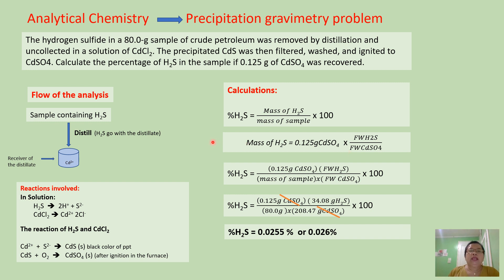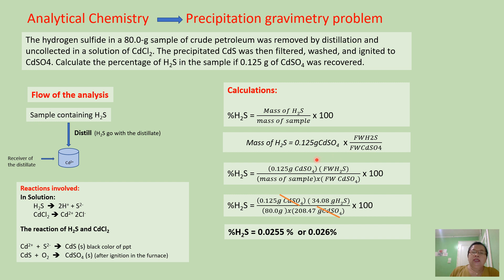In gravimetry, to calculate the mass of the analyte, the mass of analyte equals the mass of precipitate — which is measured on an analytical balance — multiplied by the formula mass of the analyte over the formula mass of the precipitate. You also have to consider the mole ratio of the precipitate and the analyte. In this case, our analyte is hydrogen sulfide and our precipitate is cadmium sulfate, and cadmium sulfate forms a 1-to-1 mole ratio with hydrogen sulfide.